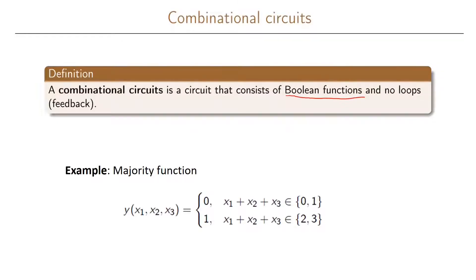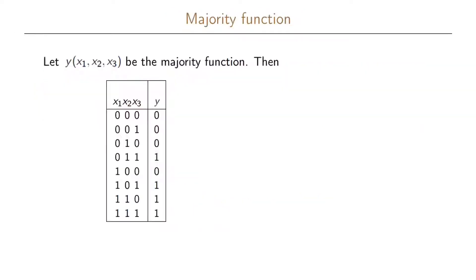The main difference between sequential circuits and combinational circuits is that sequential circuits have loops or feedback. The example we're going to look at for a combinational circuit is one we have seen before: the majority function. The majority function with three variables gives output zero if the sum of the inputs is zero or one, and output one if the sum of the inputs is two or three.